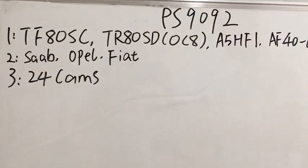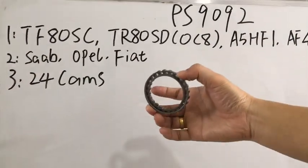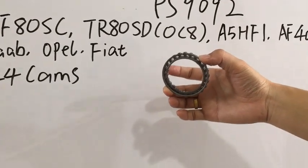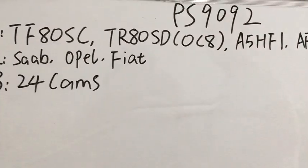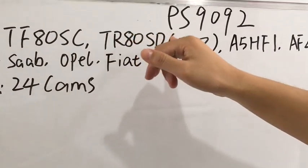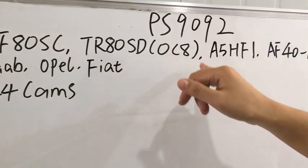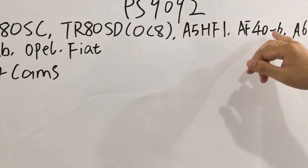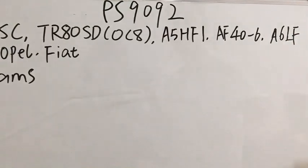This is the sprag we produce. We mainly replace the original source for these sprags. This is used in the TF80SC and TR80SD, also called 0C8, and also A5HF1, AF40-6, A6LF.